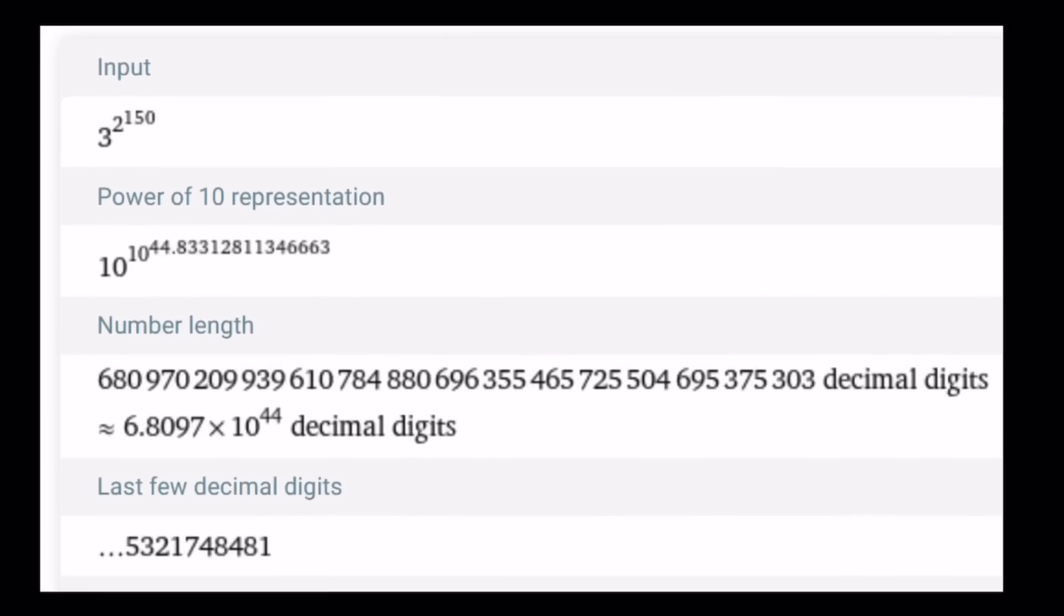Let's go ahead and take a look at some numerical values. And you'll be amazed, I think. So, first, 3 to the power 2 to the power 150, the smaller number. This number has 6.8 times 10 to the power 44 decimal digits. It has this many digits. I'm not saying this is the number. It has this many digits. Very, very, very large number.